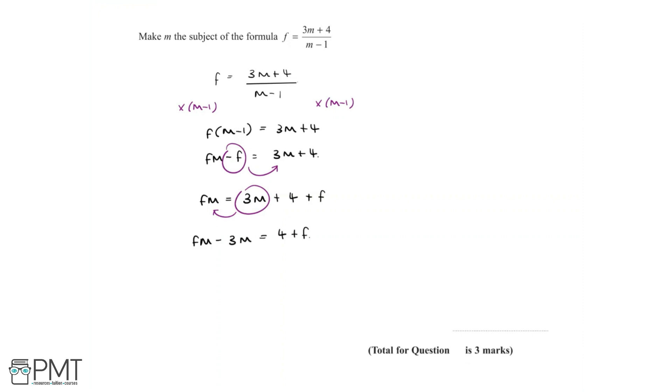Now in order to make m the subject, we want to have m on its own, and so we can factorize m from the left hand side. We'll have m multiplied by f minus 3 is equal to 4 plus f.